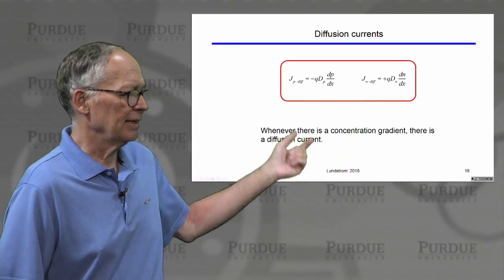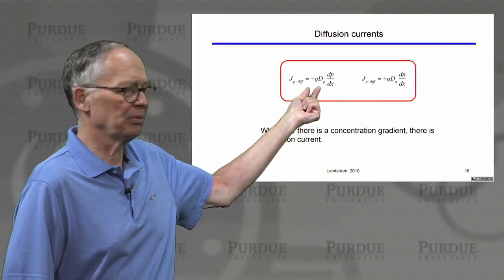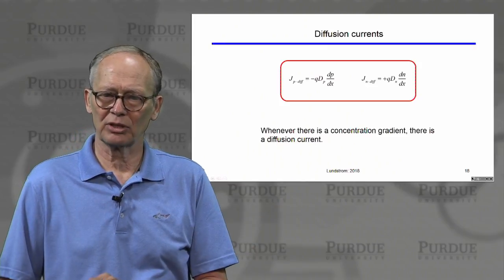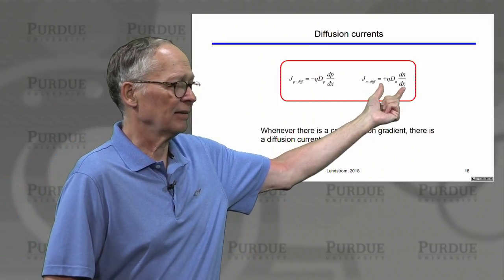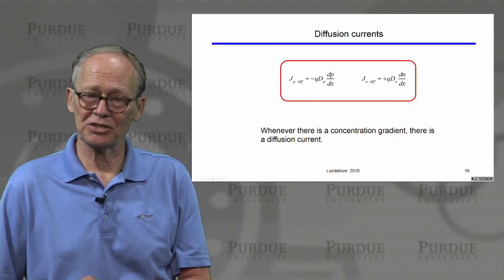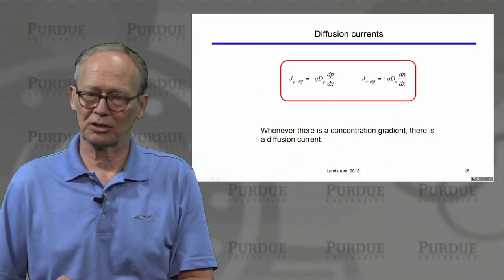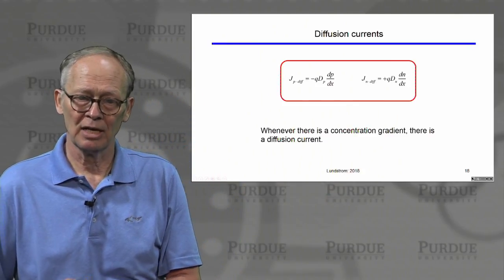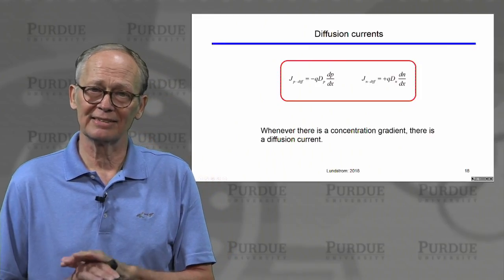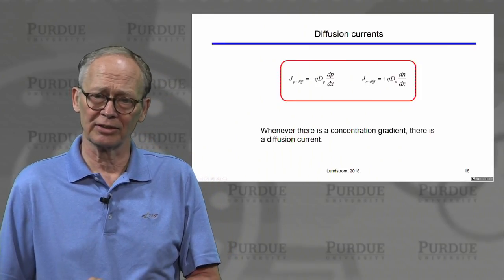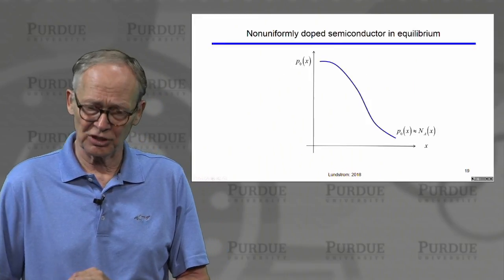If we have holes, there will be a flux of holes; multiplying by q gives the hole diffusion current. Same for electrons — electrons flow down a concentration gradient, but since electrons have negative charge, the electron diffusion current has a positive sign. Whenever there's a concentration gradient, there will be a diffusion current, and this has nothing to do with the charge on the carriers — it is in addition to the effects due to electric fields.